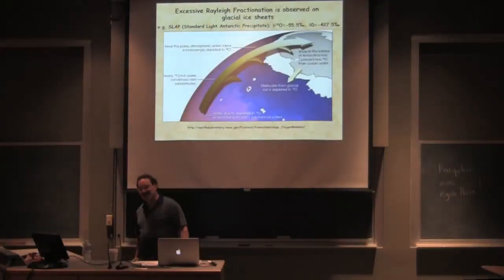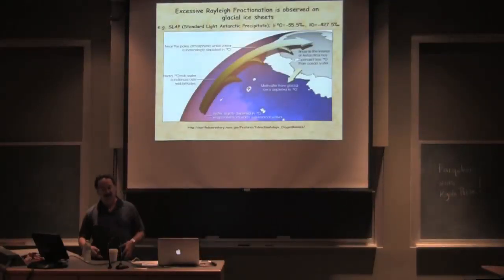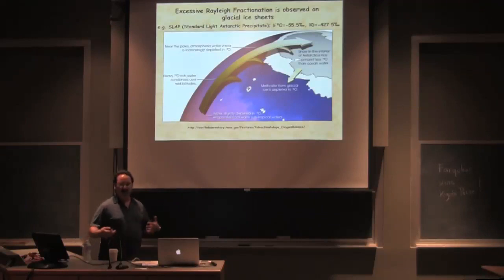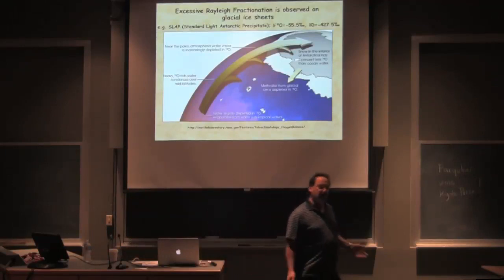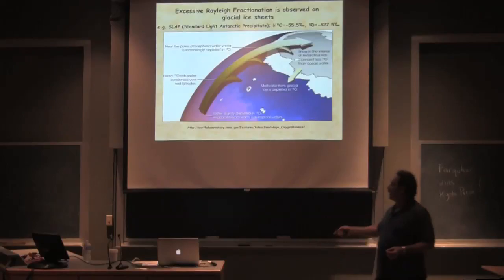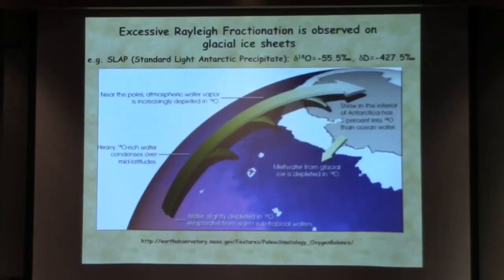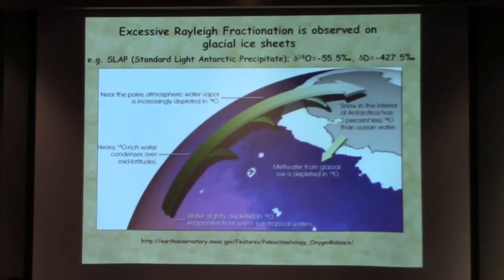One of the interesting things is where my field intersects with the fundamentals of the hydrologic system — what happens at high latitudes and through time when we have continental glaciations. If you take a look at water sources offshore and storm systems that move up onto Antarctica, by the time the water falls as snow and accumulates as ice, you've got about a 5 per mil depletion in oxygen-18.